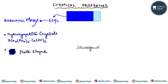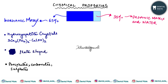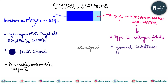The inorganic content also contains phosphates, carbonates, and sulfates. The organic matrix and water, making up 35 percent of dentine, contain type 1 collagen fibrils and ground substance. There are numerous components of the ground substance of dentine, and we have a mnemonic for it.